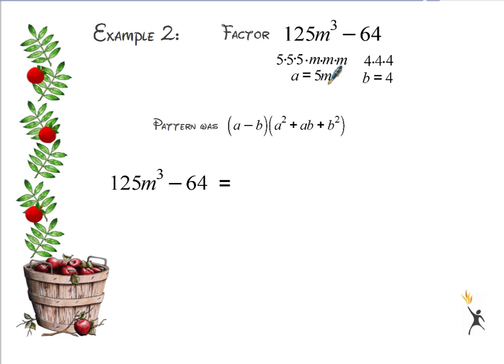I'm going to subtract the second one, which is just 4. a minus b, 5m minus 4. In the second set of parentheses, I need to square 5m. 5 times 5 and m times m gives me 25m squared.